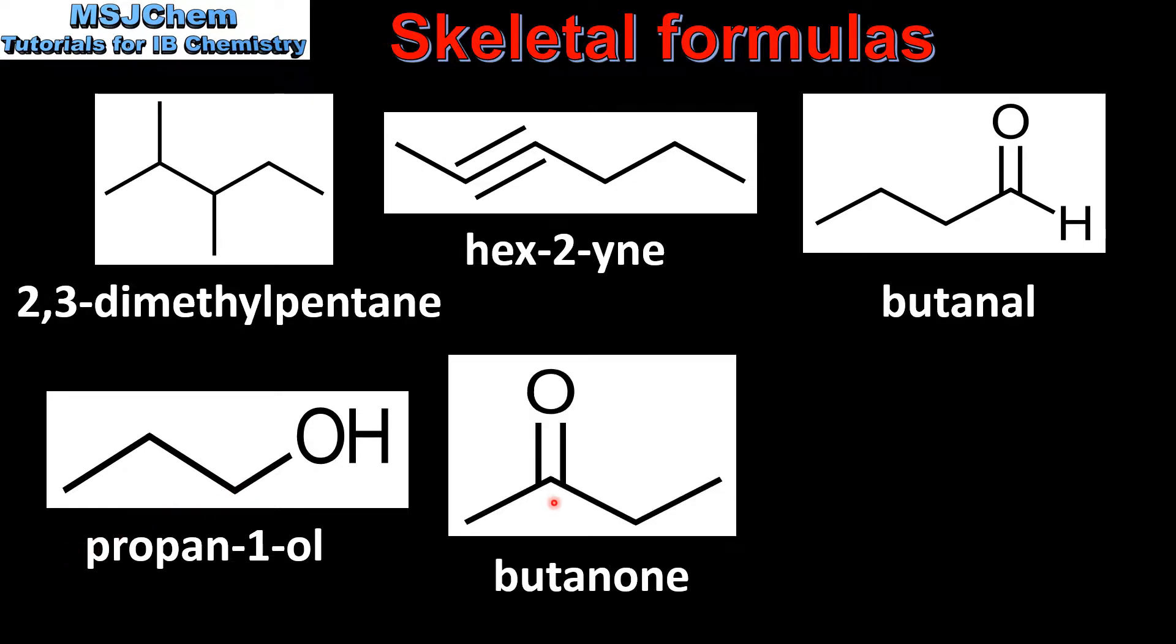Our next example has a carbonyl group and the carbon that's double bonded to the oxygen is also bonded to two other carbon groups, therefore it's a ketone. The longest continuous chain is four carbon atoms, therefore it's butanone.